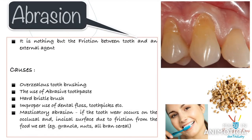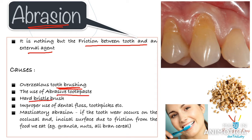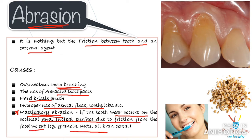Moving on, we will now discuss the individual lesions, first being abrasion. Abrasion is a result of friction between a tooth and an external agent. The most common cause is improper brushing technique, which can involve overzealous brushing, use of abrasive toothpaste, hard bristle brushes, or improper use of dental floss and toothpicks. You should also be aware of the term masticatory abrasion — if tooth wear occurs on the occlusal and incisal surface due to friction from food we eat, such as granola, nuts, or coarse cereal, that is termed masticatory abrasion.